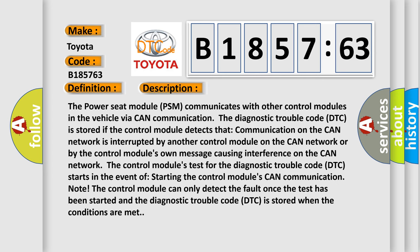And now this is a short description of this DTC code. The power seat module PSM communicates with other control modules in the vehicle via CAN communication. The diagnostic trouble code DTC is stored if the control module detects that communication on the CAN network is interrupted by another control module on the CAN network or by the control module's own message causing interference on the CAN network.